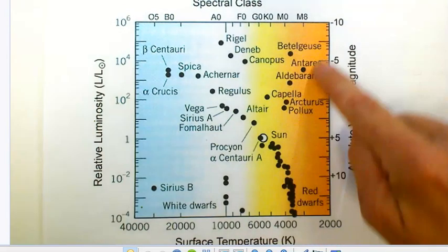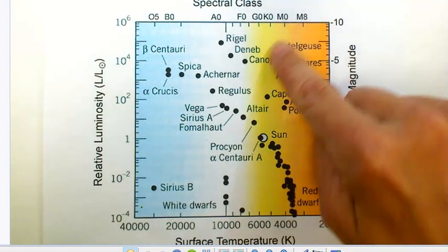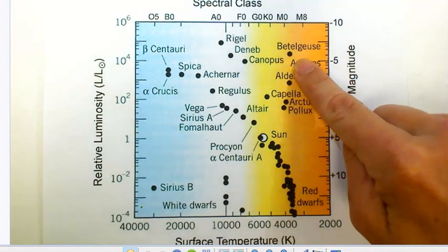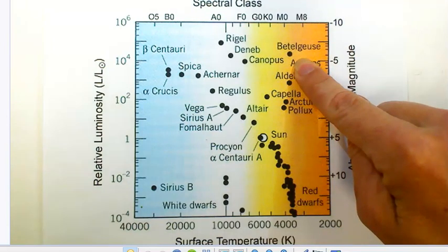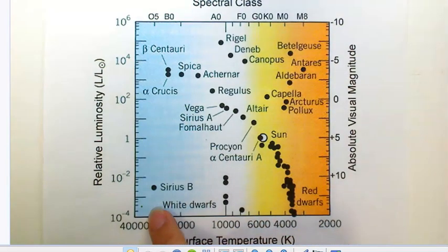Up in the top right, where stars are bright, but not all that hot, those are your giants. Down towards the bottom, where stars are really hot, but not bright, because the stars are really small, those are your white dwarfs.